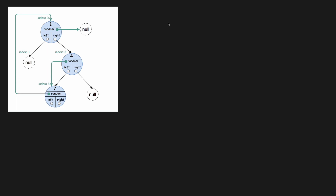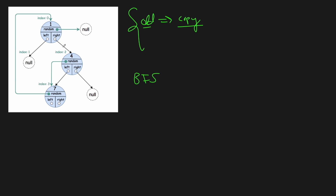The approach we want to take is the same as cloning a graph or linked list — we use a dictionary which maps the old node to its copy. This way we can track which nodes we've copied and update their copies accordingly. We perform a BFS through our tree, processing node by node. If a node's left pointer has already been processed, we don't copy it again. If not, we copy that node, add it to the copy dictionary, add it to the queue for further processing, and update all the pointers.